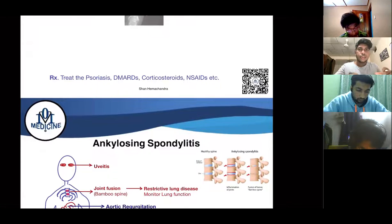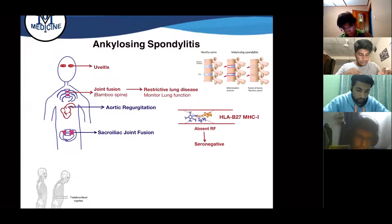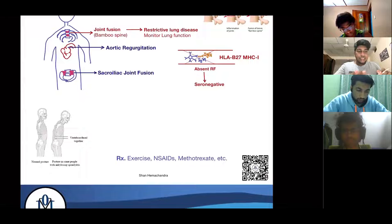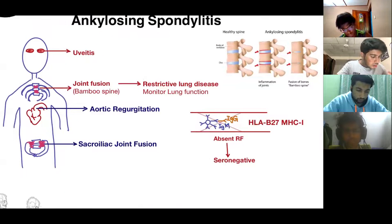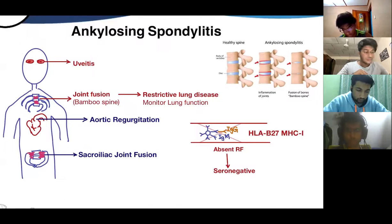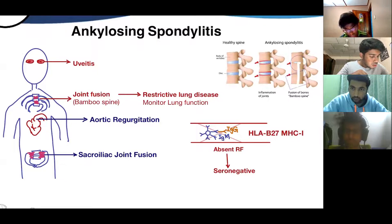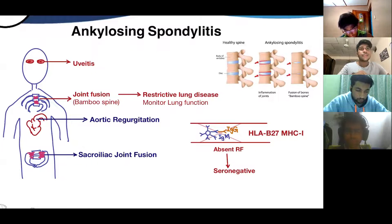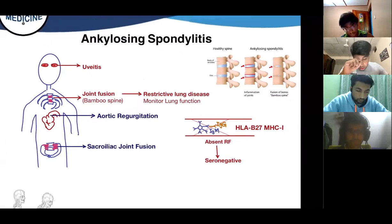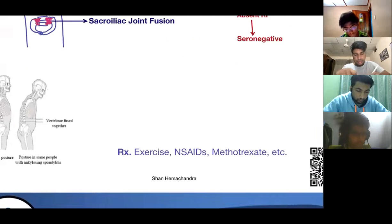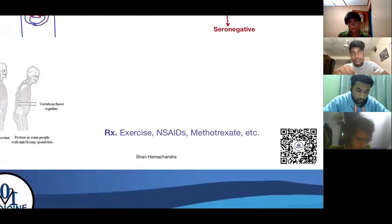In psoriatic arthritis there are X-ray findings including pencil-and-cup deformity in the DIP, and nail changes such as onycholysis. Treatment involves modifying anti-rheumatic drugs, corticosteroids, and NSAIDs. In ankylosing spondylitis, the joints of the vertebrae start fusing — there's inflammation and then gradual fusion. This is called the bamboo spine deformity, and the patient ends up stooping forward.